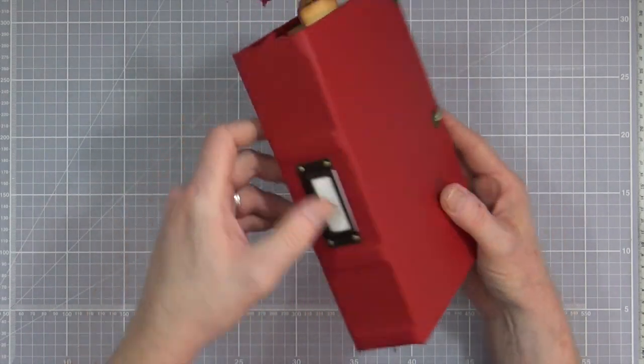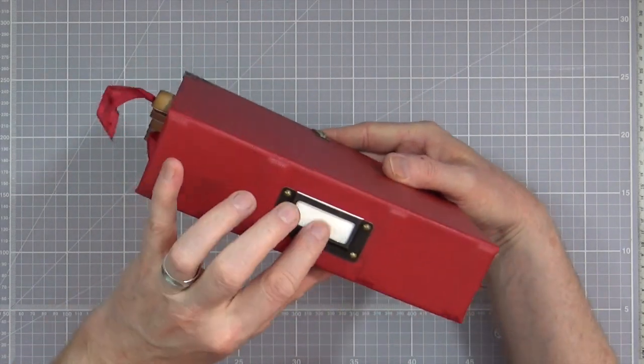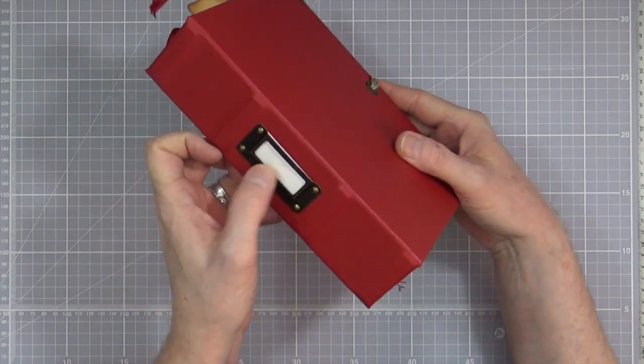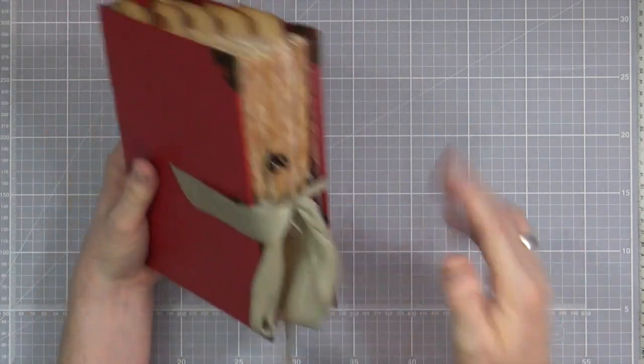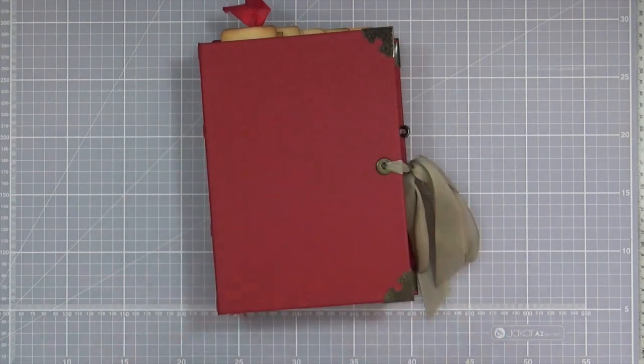And obviously there's the book plate on the spine that she can also write and then stick down if she wants to change it to whatever she wants. So there you go. One completed journal.